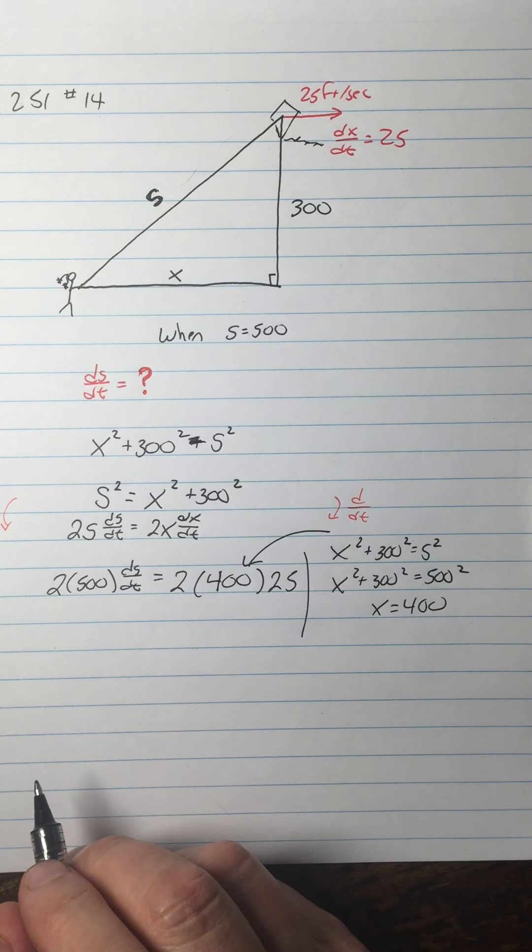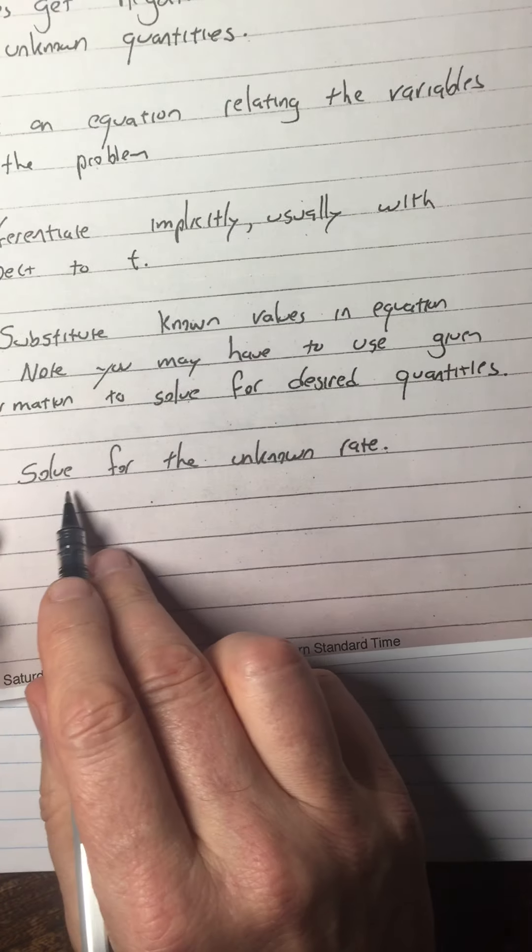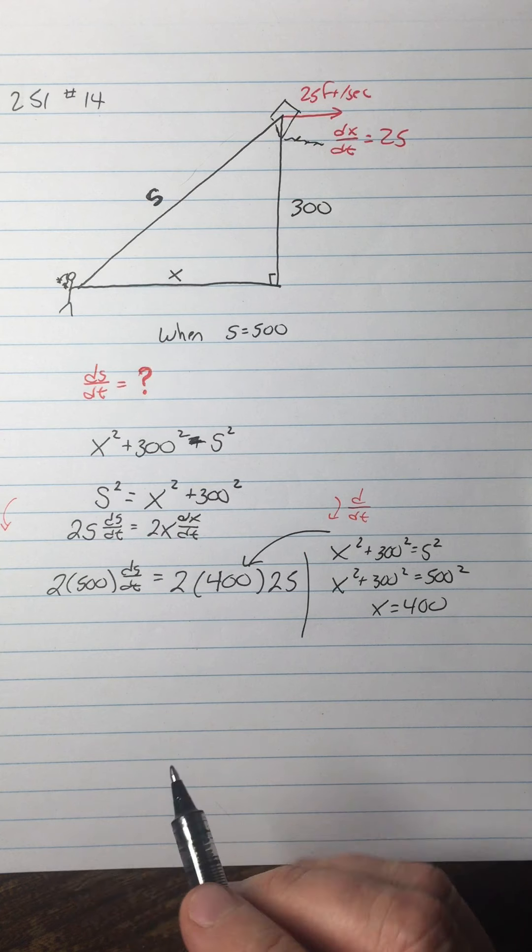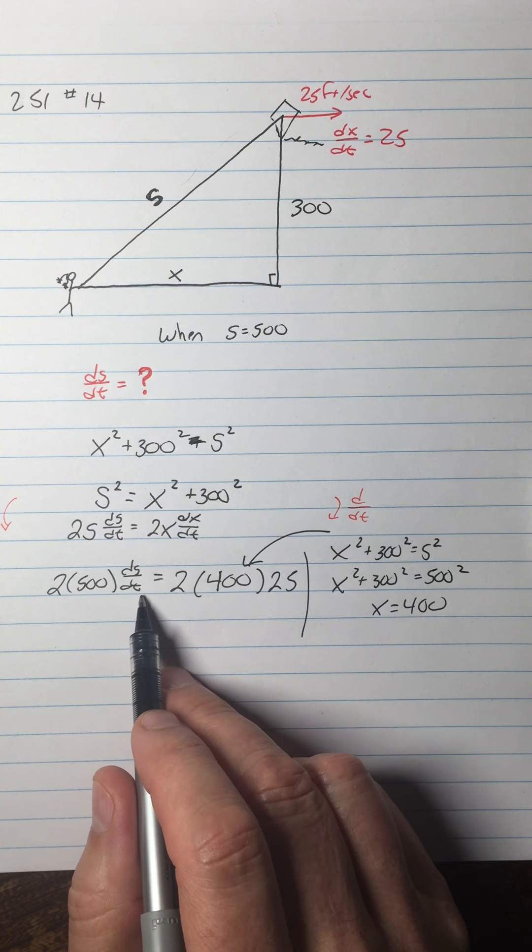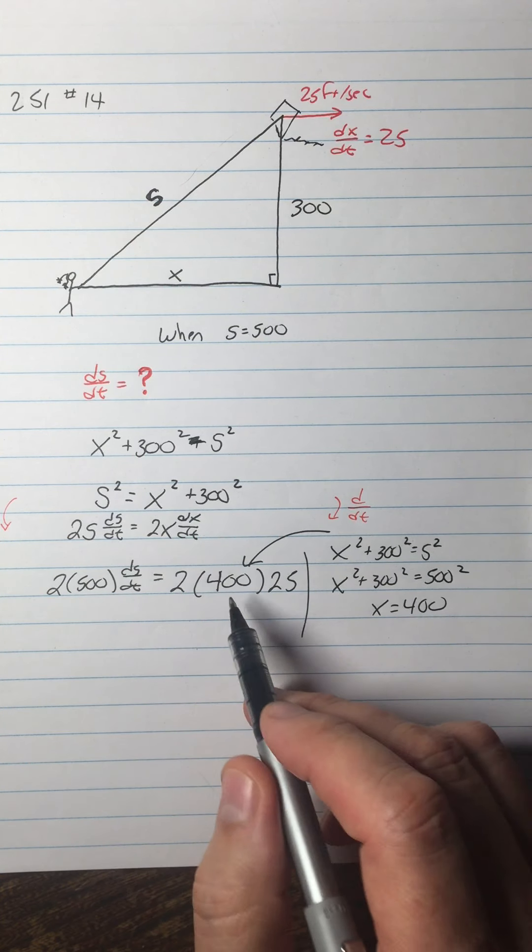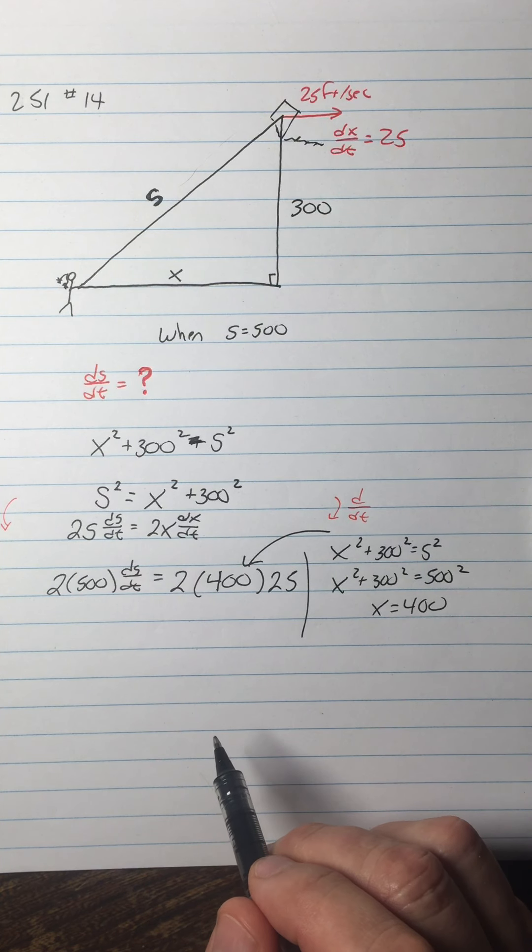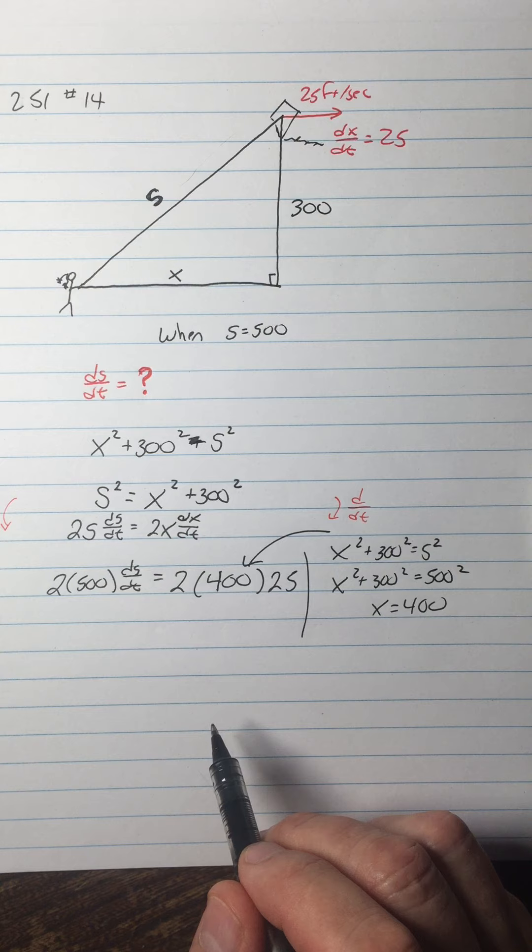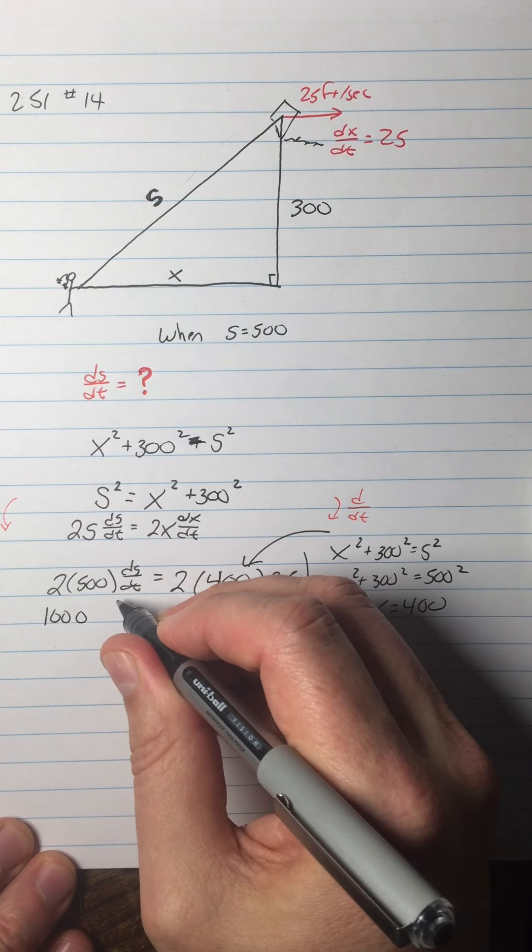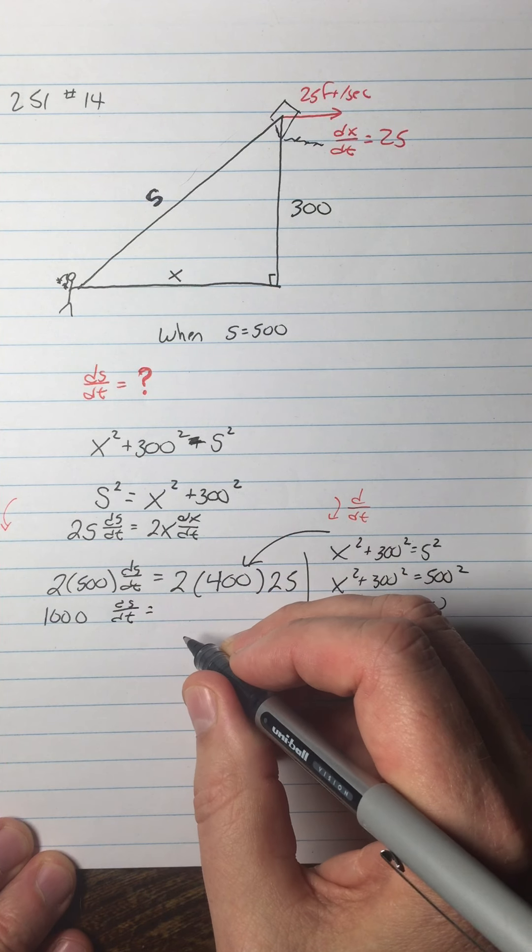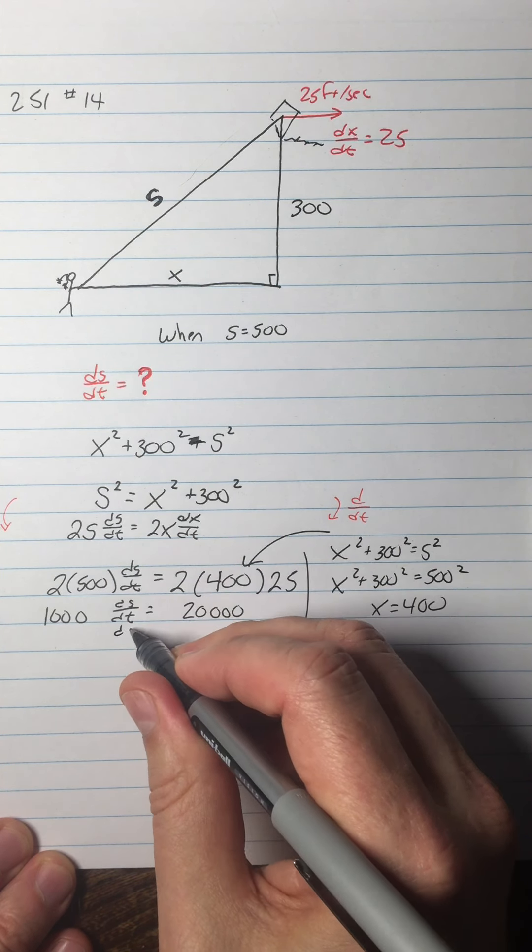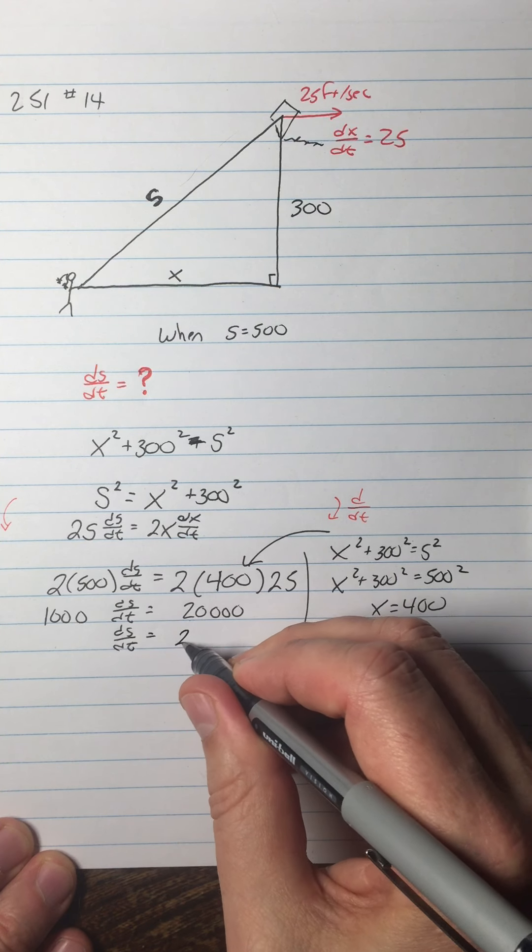Now we can put that value in here. Now this is also a good example of how sometimes you have to solve for the unknown rate. So in our last one, the unknown rate just came out of our problem. In this case, we have to actually solve for that ds/dt. So we could do something clever like reduce the zeros on both sides since everything's multiplied. I could divide both sides by 500. I could divide both sides by 1000 right away. Well, I guess not 1000, but I could divide both sides by 200 right away. But I didn't do that. I just said, let's just crank it out. 1000 ds/dt equals 20,000. So then divide both sides by 1000 and we get ds/dt equals 20.